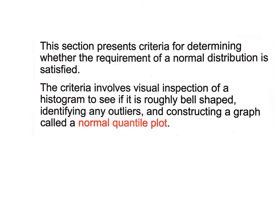Today we're going to talk about how you know our population has a normal distribution. We're gonna do a couple things: visual inspection of a histogram to see if it's roughly bell-shaped, see if there's any outliers, and construct something called a normal quantile plot. It's also called a QQ plot, and I think on our software that we use it's gonna actually say QQ plot.